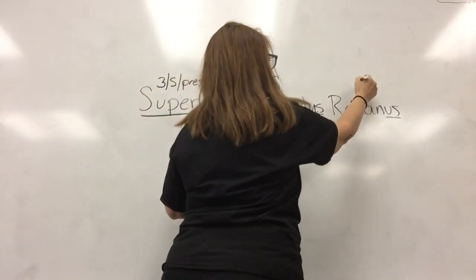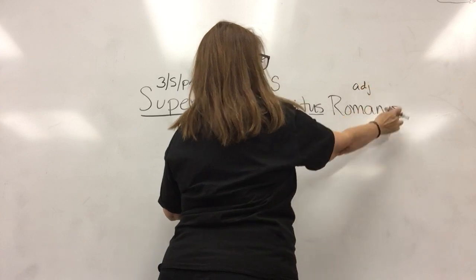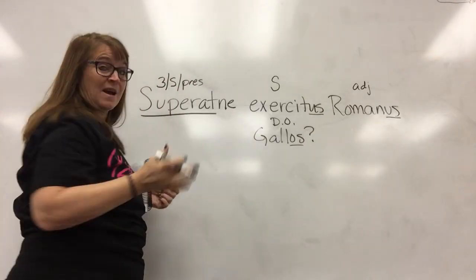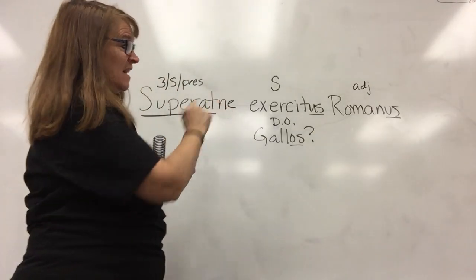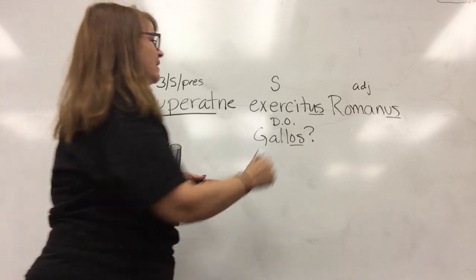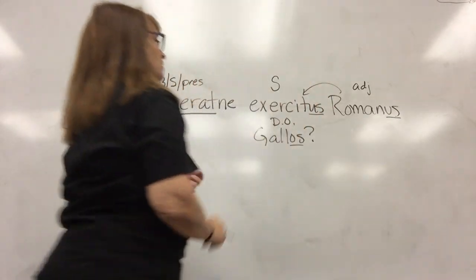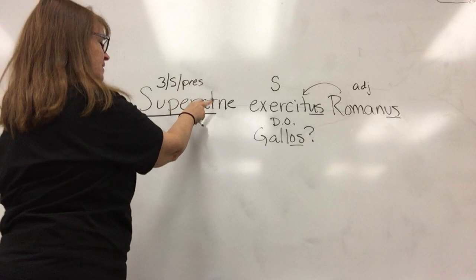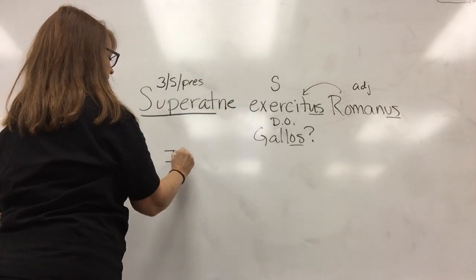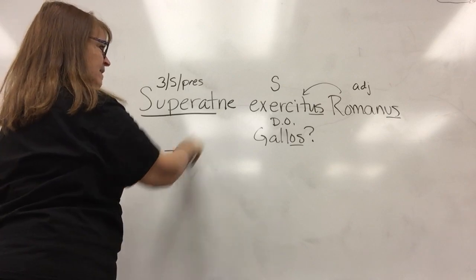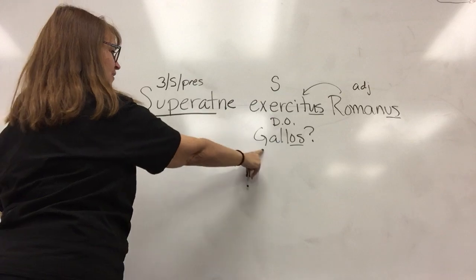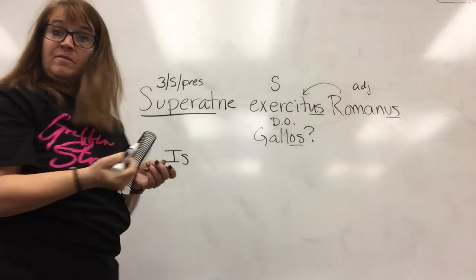And of course Romanos is my adjective. Is it modifying exercitus or is it modifying Galos? This one's kind of easy because they look the same, so that's an easy one to tell which one it's modifying. Now I have to make it a question. Because it's present tense, I'm going to start with an 'is.' Is my subject — the Roman army — overcoming the Gauls? That wasn't too bad.